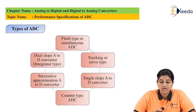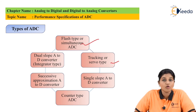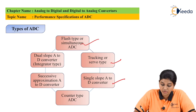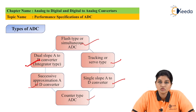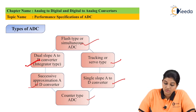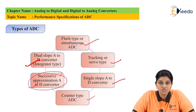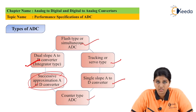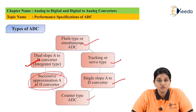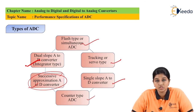The different types of ADC are: flash type or simultaneous ADC, tracking or servo type ADC, single slope or dual slope ADC, counter type ADC, and successive approximation ADC. Out of these, the successive approximation ADC is most widely used in many applications. Every technique has its own conversion method, which decides the conversion time and speed of operation. The successive approximation and dual slope types are most widely used because the conversion technique ultimately decides conversion time and speed of operation.